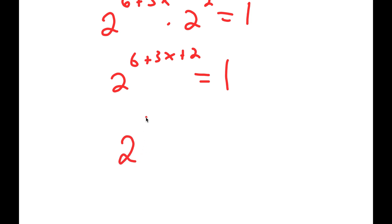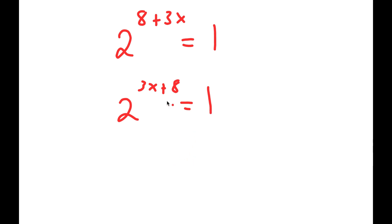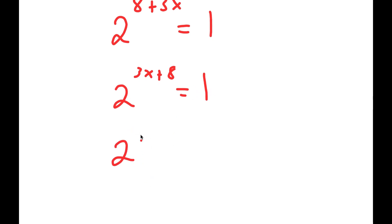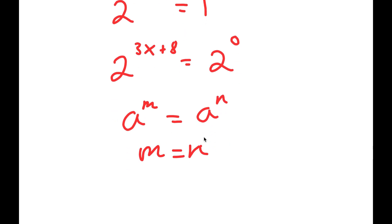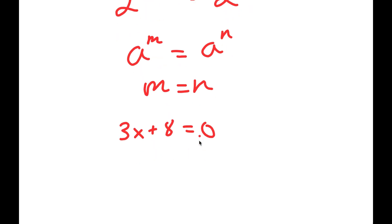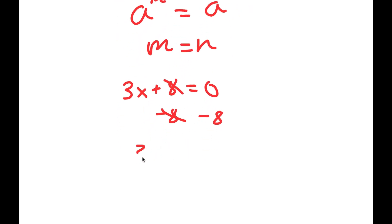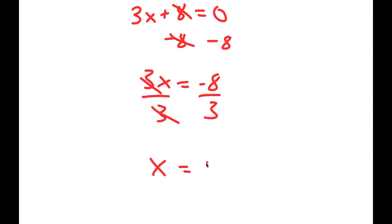Now 6 plus 2 is 8, so I get 2 to the power of 8 plus 3x is equal to 1, which I can write as 2 to the power of 3x plus 8 is equal to 1. And 2 to the power of what number equals 1? 2 to the power of 0. So I can write this as 2 to the power of 3x plus 8 is equal to 2 to the power of 0. If a to the power of m equals a to the power of n, then m equals n. So 3x plus 8 equals 0. Subtracting 8 from both sides gives 3x equals negative 8, and dividing by 3 gives x equals negative 8 over 3.